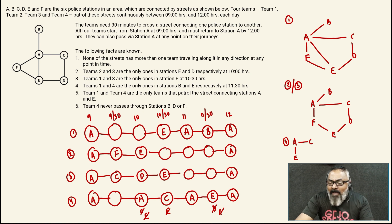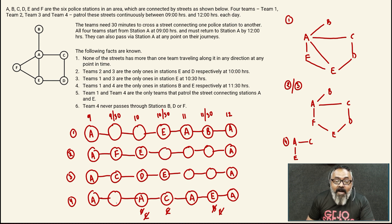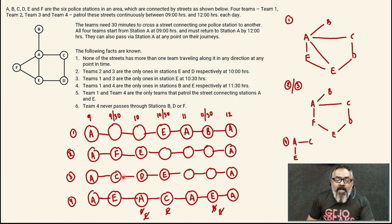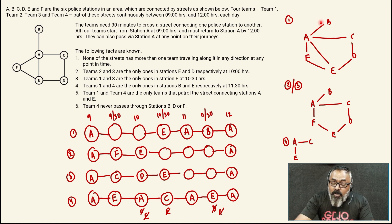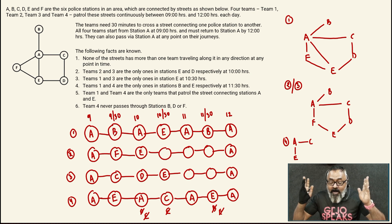For team 1, A-F is gone, A-C is gone, and A-E is gone — all those paths are taken. The only thing left is A-B. So that entry has to be B, and since B is only connected to A, the adjacent slot must be A. We've now cracked team 1 and team 4's complete stories. Let's now look at what happens with team 3's path from E back to A.